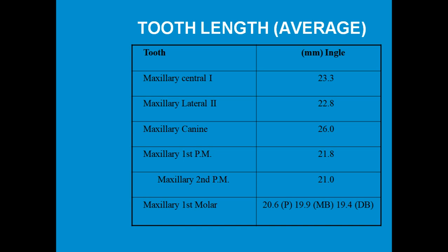You must have done tooth carvings in your first year BDS, so you need to remember the average length of the tooth. This is important to have an idea of the working length, so that we do not extend our instruments far beyond the apical foramen or fall short of the minor constriction. There may be small variations in length from person to person, but these are the average values.